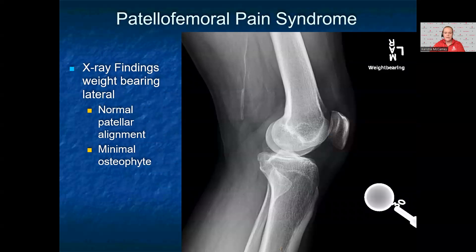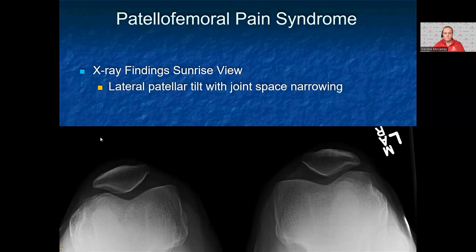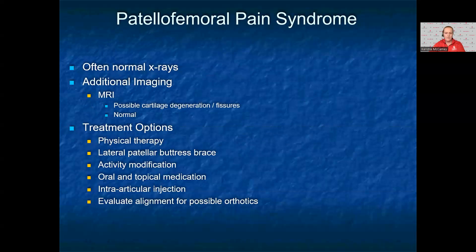In this lateral x-ray, the patient has normal patellar alignment with minimal osteophytes seen in the superior pole of the patella, and narrowing of the patellofemoral joint space. The sunrise view of a patient with the same history shows bilateral lateral patellar tilt with mild lateral joint space narrowing. Both of these are consistent with patellofemoral pain syndrome.